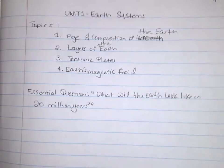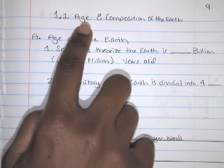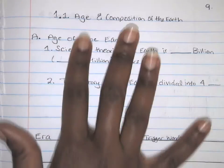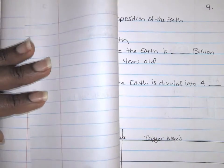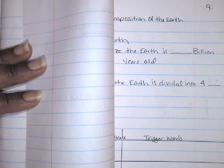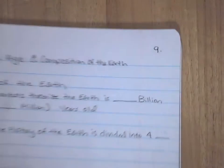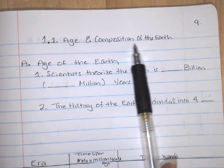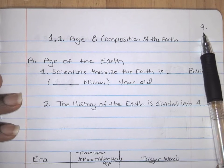Now we're going to move on to writing the notes for the first subsection of Unit One, which is 1.1: Age and Composition of the Earth. I'm going to write mine on a fresh piece of paper; if you would like, you can write it on the back of your Unit One page. At the top, write the title of the subsection — 'Age and Composition of the Earth' — and the page number, nine.